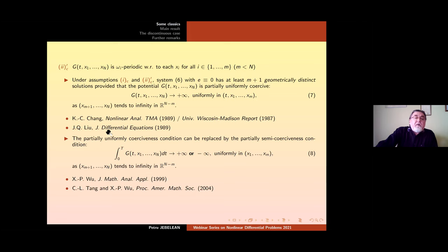Actually, Liu introduced a generalization of the saddle point theorem and this will be used also in the next discussion. Namely, the partially uniformly coercive condition can be replaced. So, this one can be replaced by the partially semi-coercive condition meaning that instead of this convergence, we have the convergence of this integral uniformly in x_1 to x_m as this component tends to infinity.